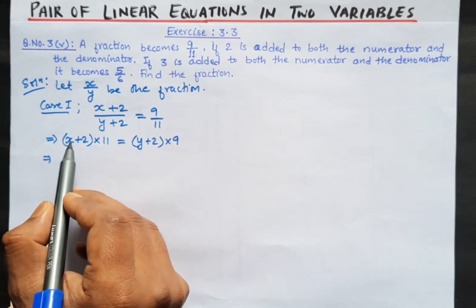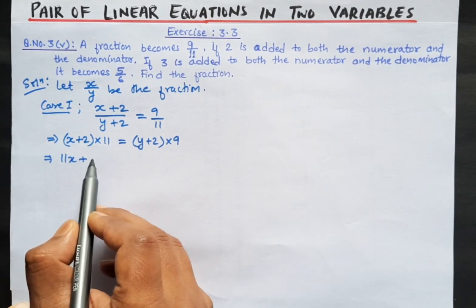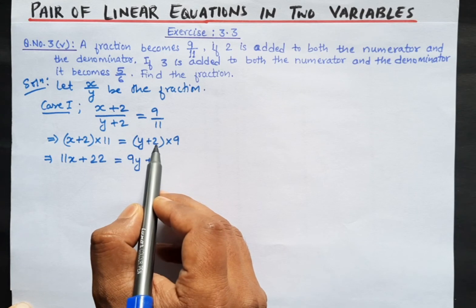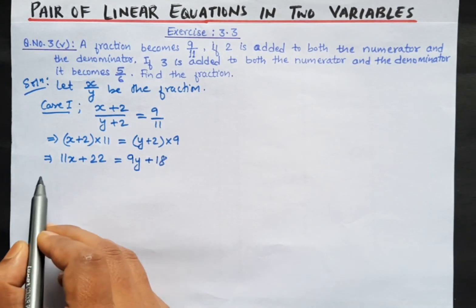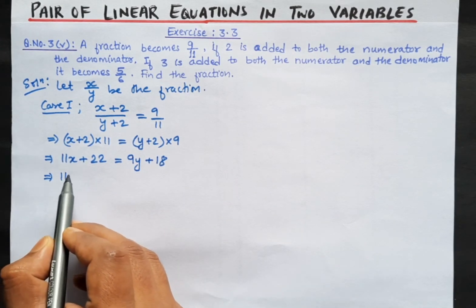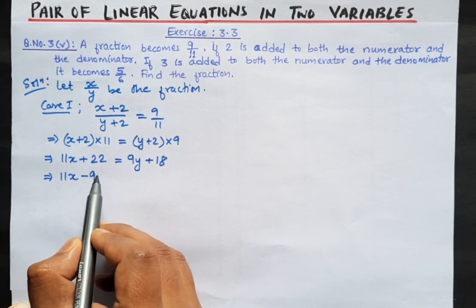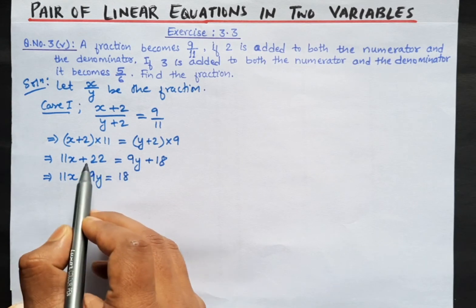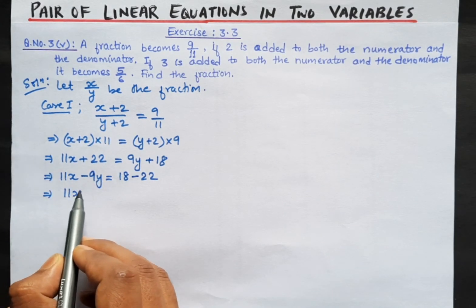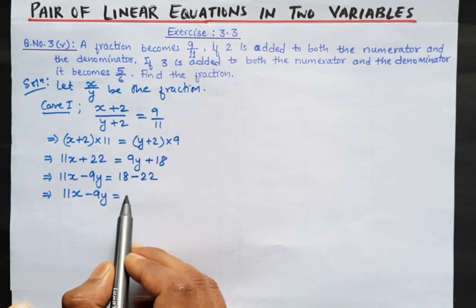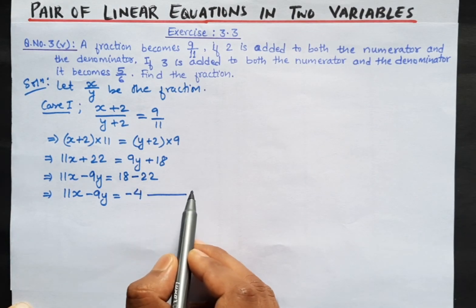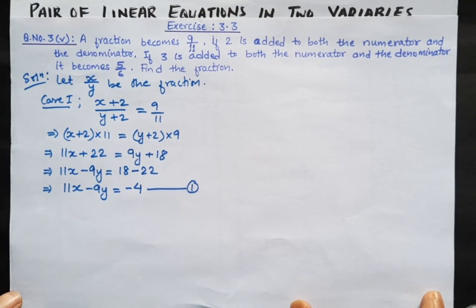Multiplying out: 11x plus 22 equals 9y plus 18. Now bringing variables to the left-hand side and constants to the right-hand side: 11x minus 9y equals 18 minus 22, which is minus 4. This is our equation number 1.